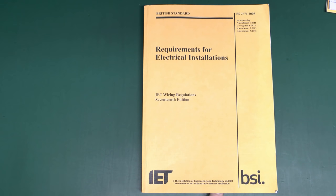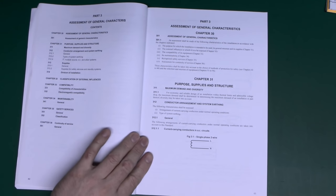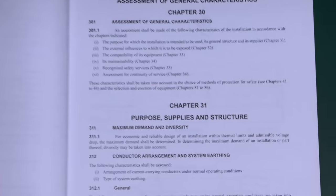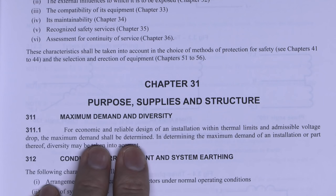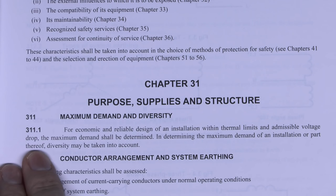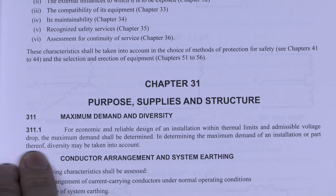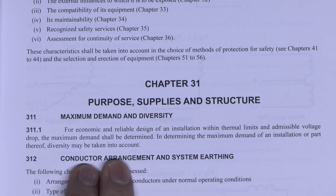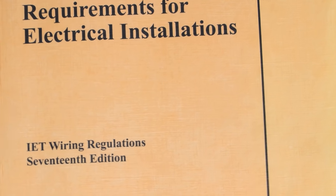We'll start by looking in two books to see what the official picture is. First, the BS 7671 — there's only one part that applies, in chapter 31. It says: for economic and reliable design of an installation within thermal limits and admissible voltage drop, the maximum demand shall be determined. In determining the maximum demand of an installation or part thereof, diversity may be taken into account. And that's all it says — most unhelpful.